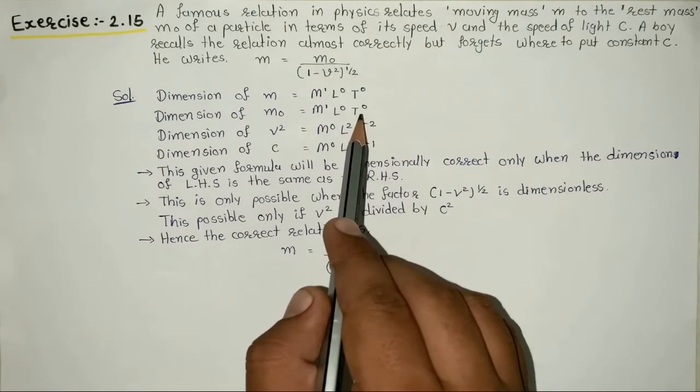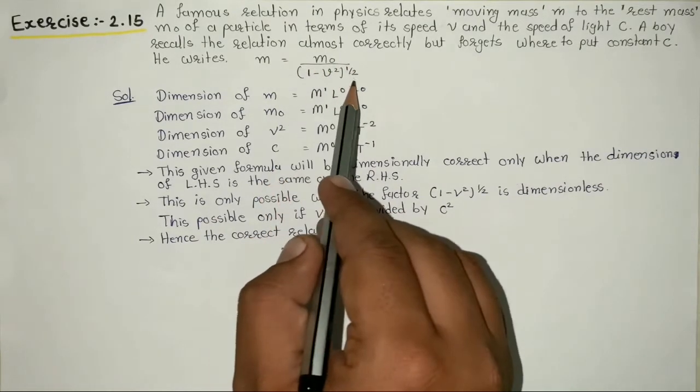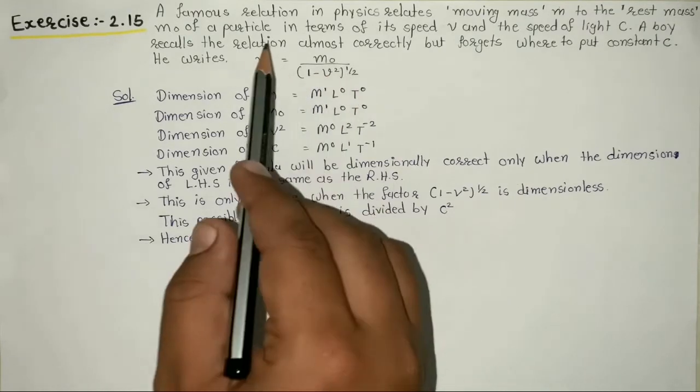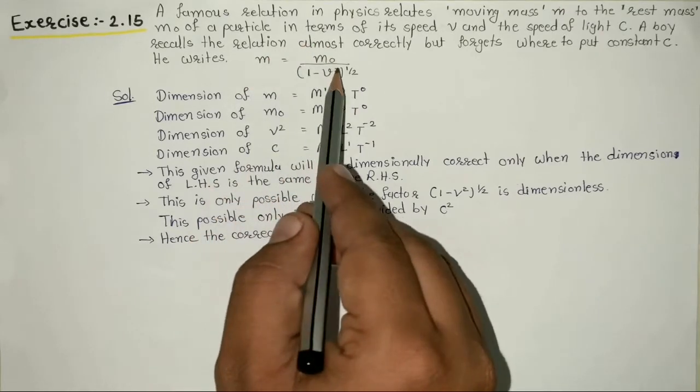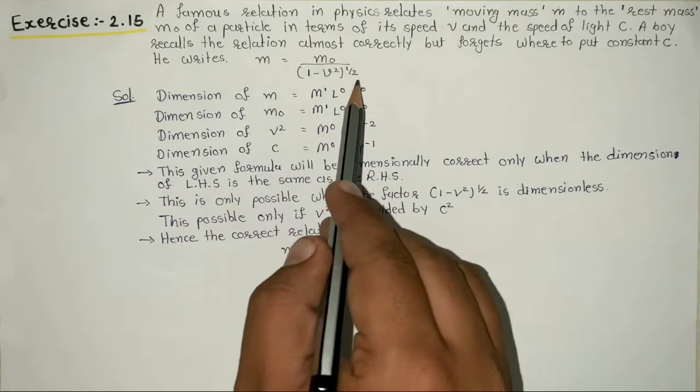The denominator in this equation, 1 minus v square, needs to be analyzed.